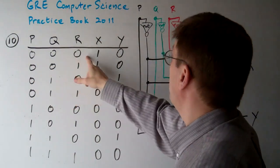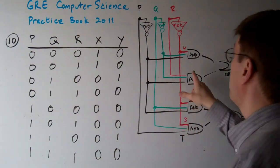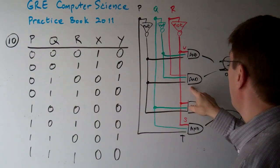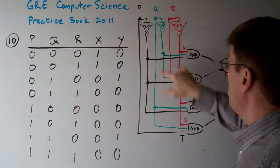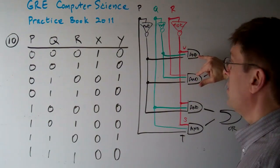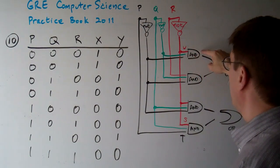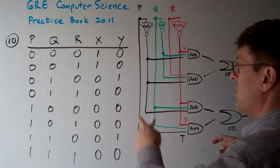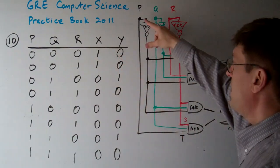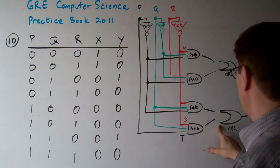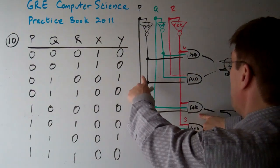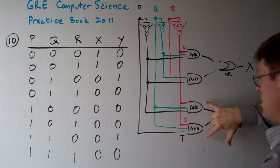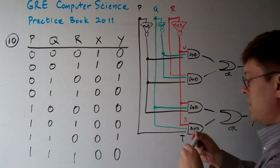If P is zero, Q is zero, and R is zero, let's look at X. If P is zero, then not P is going to be one, so we have a one here. If Q is zero, then not Q is going to be one. And if R is zero, then not R is going to be one, which is enough to get X equals one. For Y, if P is zero, this is going to be zero, and if Q is zero, this is going to be zero, so Y is zero. So line one checks out.